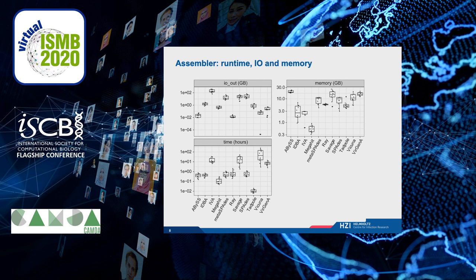As to the runtime and memory use, among the assemblers, some tools consumed less than 300 MB while others consumed less than 1 GB memory. Velvet and another tool consumed more than 10 GB memory. Tadpole was among the fastest assemblers.